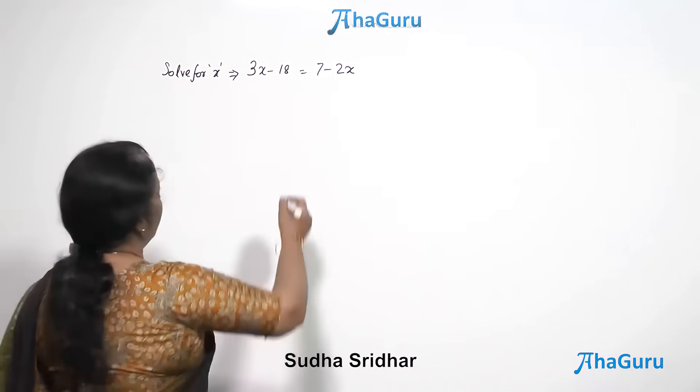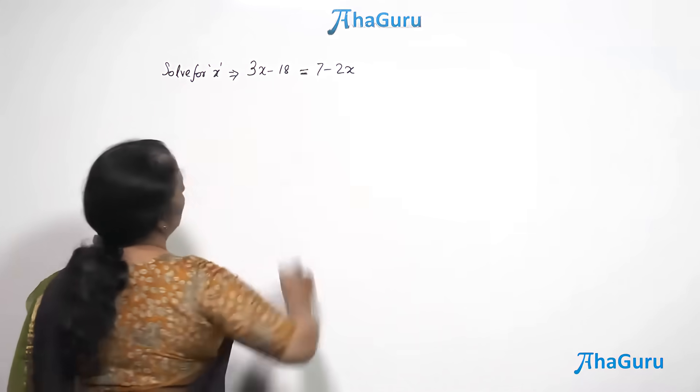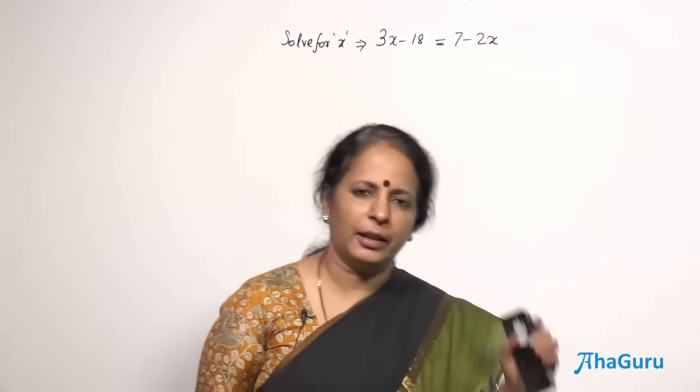Solve for x, 3x minus 18 is equal to 7 minus 2x. This is a simple linear equation.